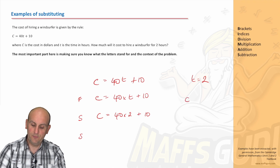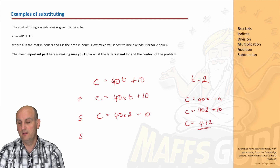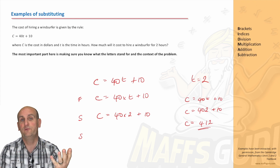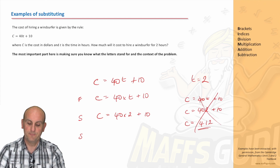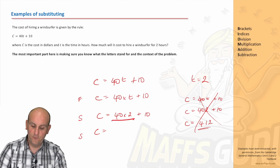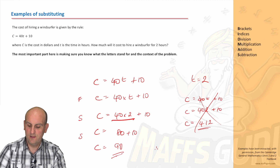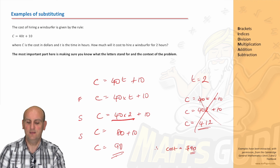A lot of people do silly things — they write c equals 40, put the 2 in there plus 10 and get c equals 412, forgetting the multiplication between 40 and t. Doing it correctly: c equals 40 times 2 plus 10. Using BIDMAS — no brackets, no indices, no division, but there is multiplication, so I do that first: 40 times 2 gives 80, plus 10 gives c equals 90. Therefore the cost is equal to $90.